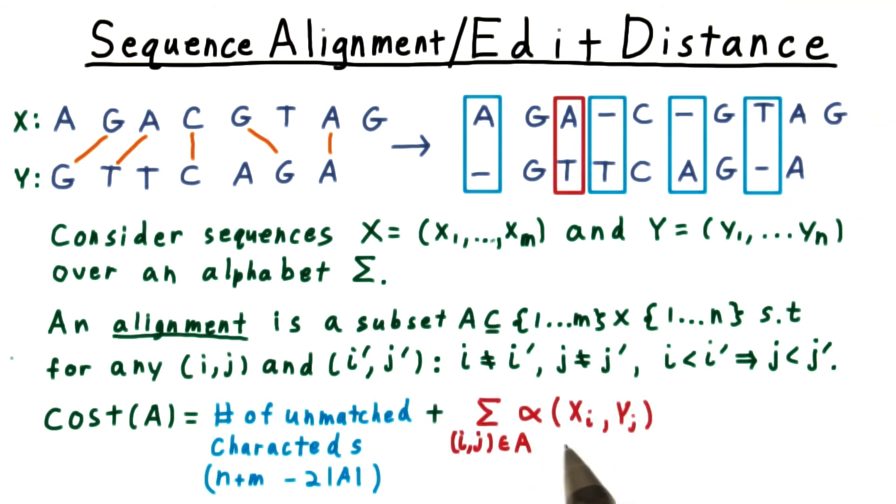The other part of the cost comes from the matching of the two characters, and we'll notate that cost with this function alpha. Typically, alpha is zero when the two characters are the same. And the problem here, of course, is to find the alignment that minimizes this cost.